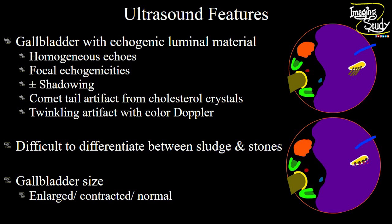Let's talk about the fetal gallbladder ultrasound features. We will see the gallbladder with echogenic luminal material. It might be of homogeneous echoes or focal echogenic structures. It may or may not cast posterior acoustic shadows, so keep that in mind. If it is more than two or three millimeters, then it may cast posterior acoustic shadow. You may also get comet-tail artifact from the cholesterol crystals. And if you put the color Doppler, then you will get the twinkling artifact.